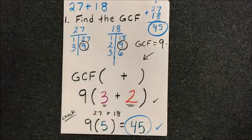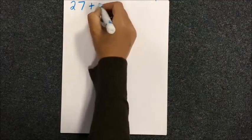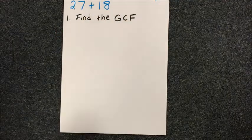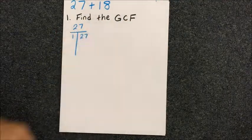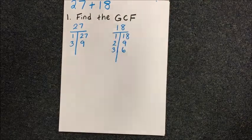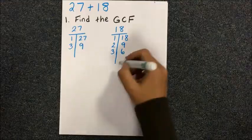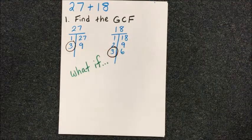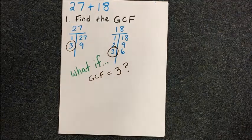Why go through all this extra work? Here's why. Let's do the same problem again and change one thing. We're still finding all the factors of 27 and 18. What if we thought that the greatest common factor was 3 and used that in our problem setup?